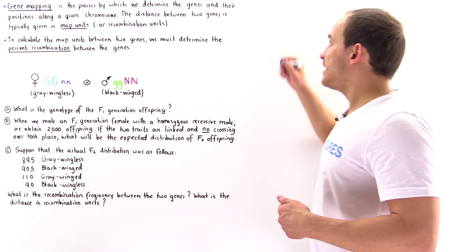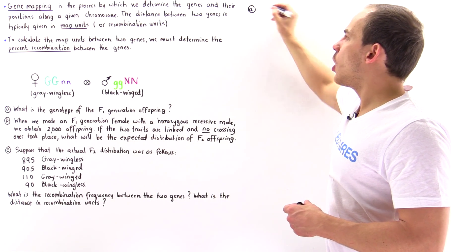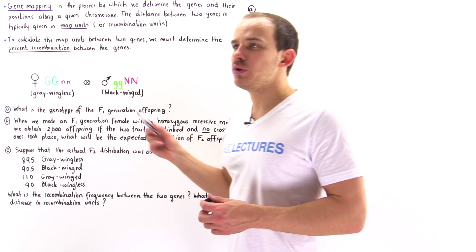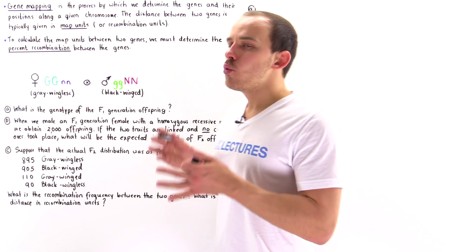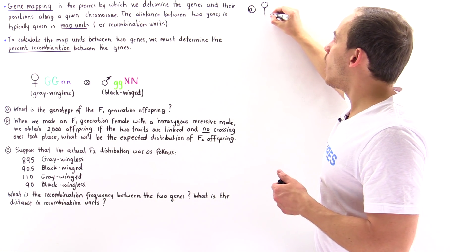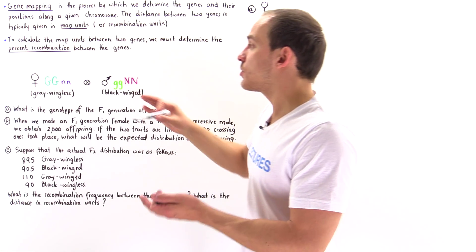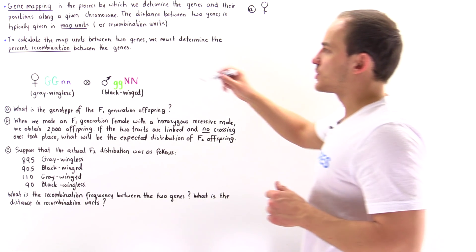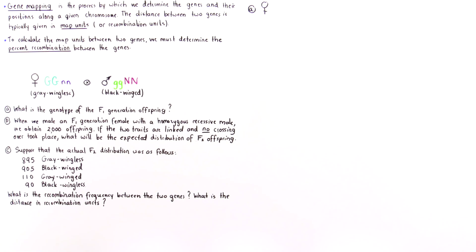In part A, what is the genotype of the F1 generation offspring produced when we mate these two individuals? To determine the genotype, we first have to answer: what are the gametes produced by these two types of individuals? Let's begin with the female individual.